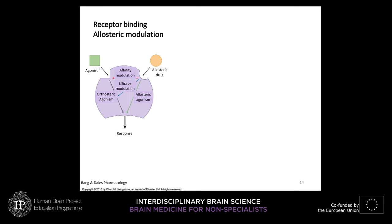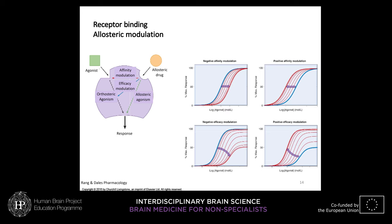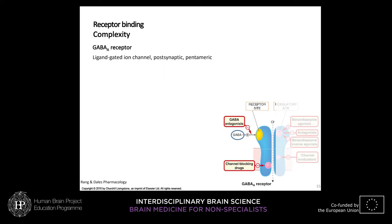The curves one gets with allosteric modulators show that when they modulate the agonist with negative affinity modulation, there is a displacement of the curve to the right; with positive affinity modulation, displacement to the left. The same can happen with efficacy. This gives you an idea of how complex receptor binding can be.